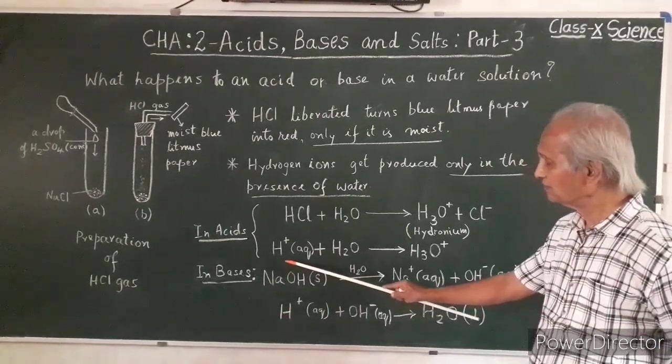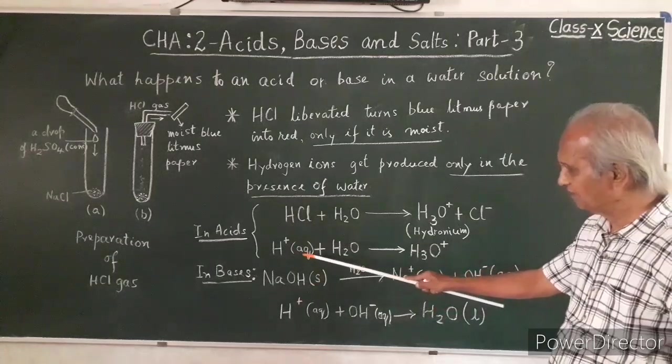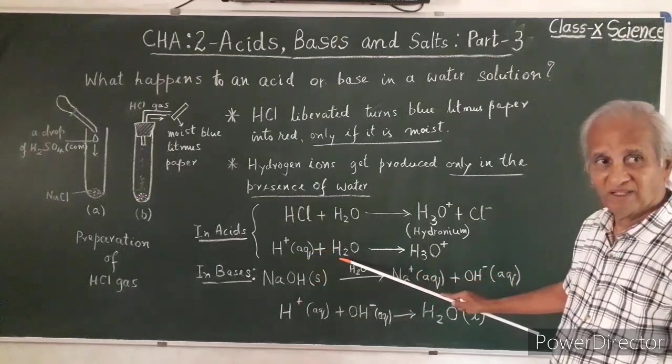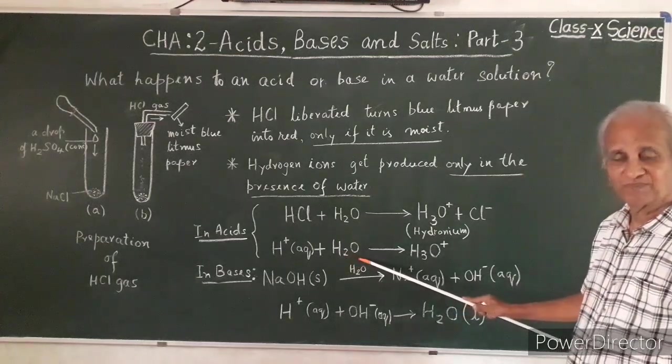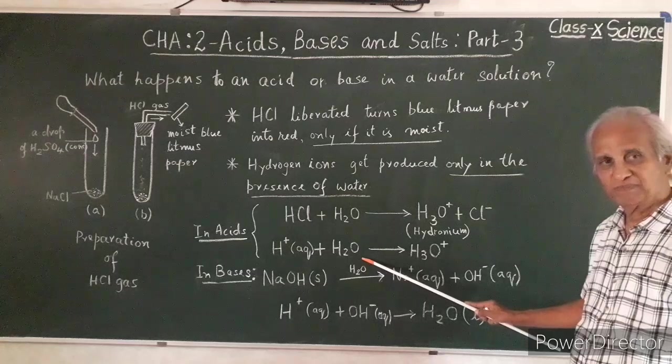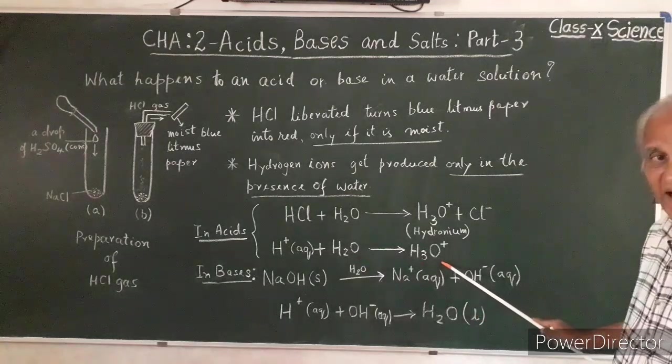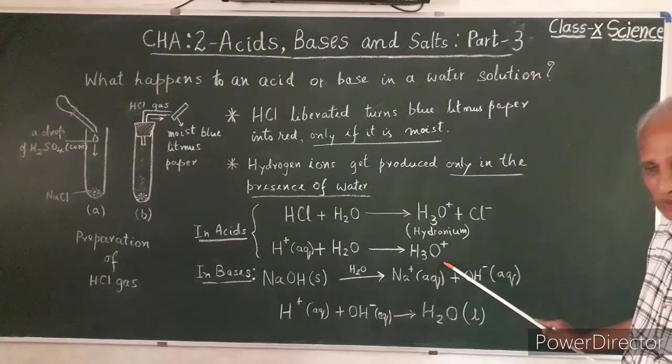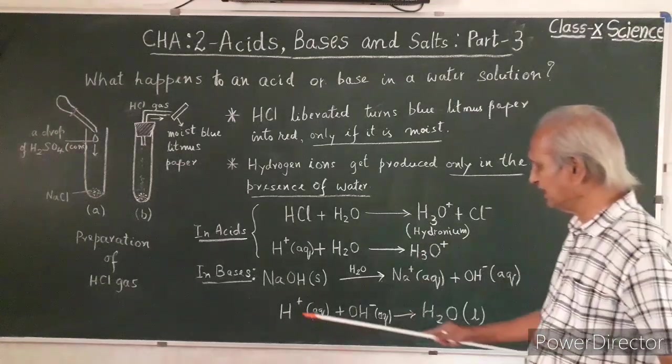H plus plus H2O gives H3O plus. It is an aqueous condition. The presence of water has made the difference. Hydrogen ions from hydrogen chloride joined the water molecules and we had hydronium molecules. They are positive.